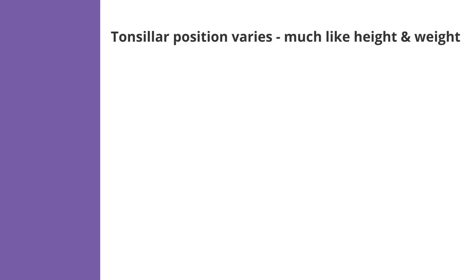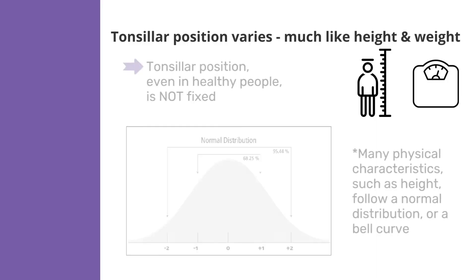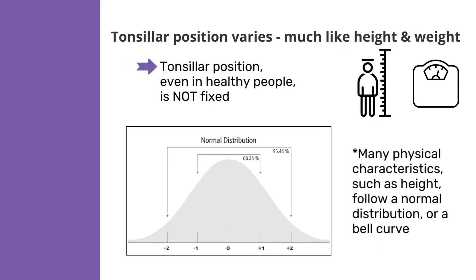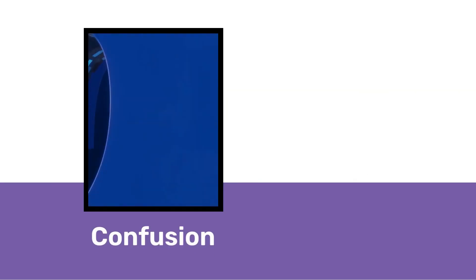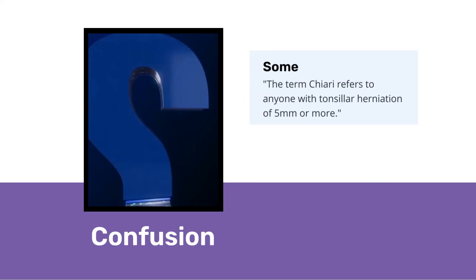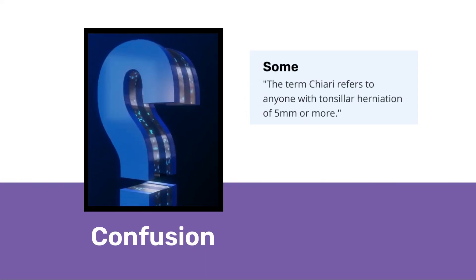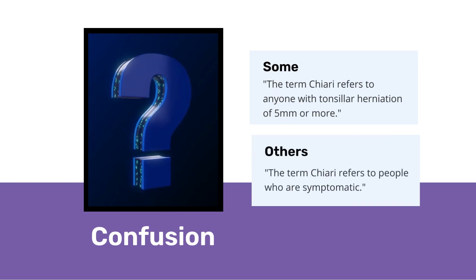It has become clear that tonsillar position varies across the population, much like height and weight do. In addition, studies have shown that tonsillar position, even in healthy people, is not fixed, but rather varies over time. All of this results in confusion about what Chiari actually is. While some people use the term Chiari to refer to anyone with tonsillar herniation of five millimeters or more, others reserve the term Chiari to only refer to people who are symptomatic.